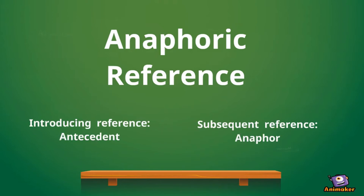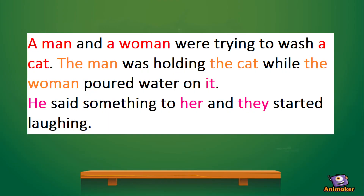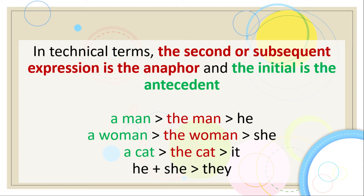The introductory referent is called the antecedent, and the subsequent referent is called the anaphor. For example: 'A man and woman were trying to wash a cat. The man was holding the cat while the woman poured water on it. He said something to her and they started laughing.' In technical terms, the second sequence expression is the anaphor, and the initial is the antecedent. The anaphor referent should refer to something mentioned earlier.